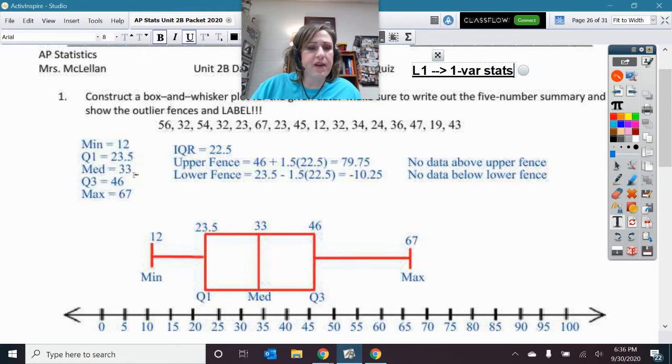All right, so here's our five-number summary. Then of course our Q3 minus Q1, and then I calculated the fences, and we did not actually have any data above the upper fence or below the lower fence. Now you remember, if you have a fence, then pieces of data above it are a dot. And remember that your whisker cannot touch the fence. Your whisker would go to the next piece of data inside the fence.